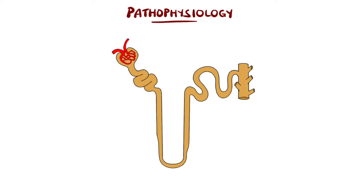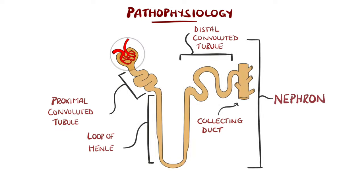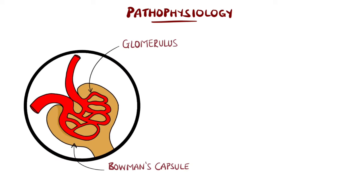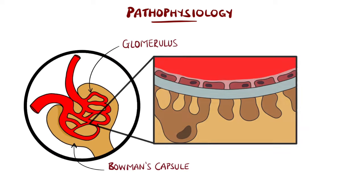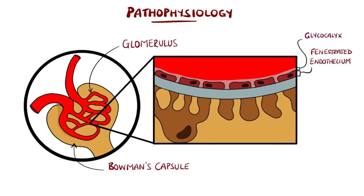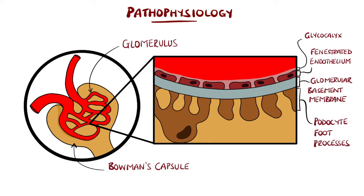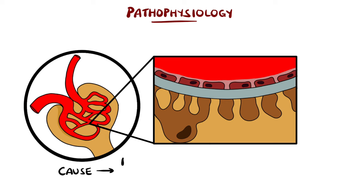The functional unit of the kidney is the nephron, which includes the glomerulus, a modified capillary. Surrounding this there are multiple layers which together form a filter. These include a fenestrated endothelium, the glomerular basement membrane, and the foot processes of podocytes, which are cells that wrap around the capillary. In most cases of nephritic syndrome, there is a trigger causing inflammation in this area.